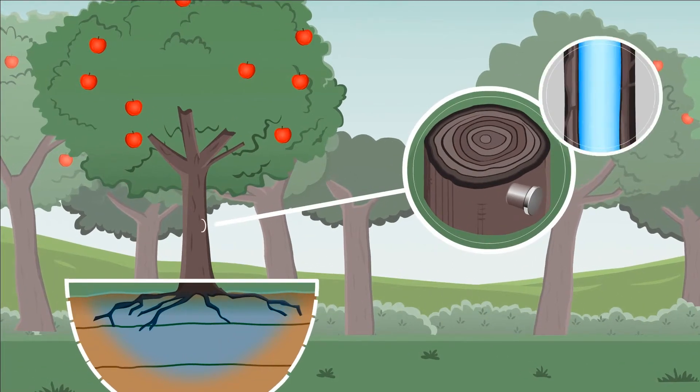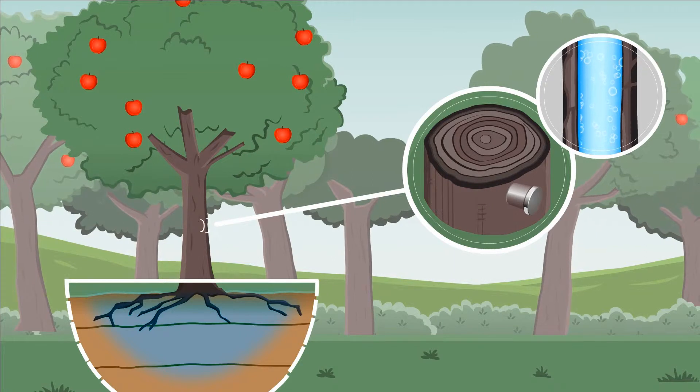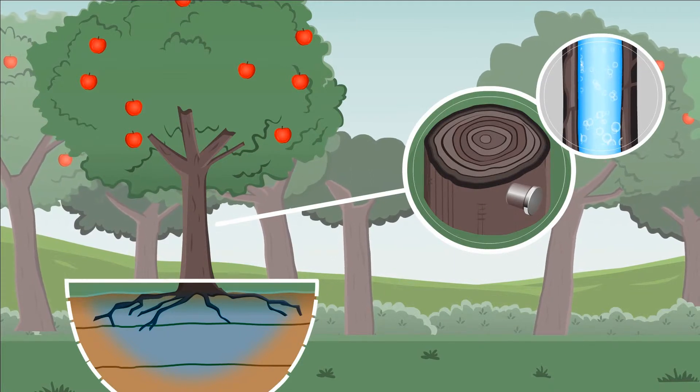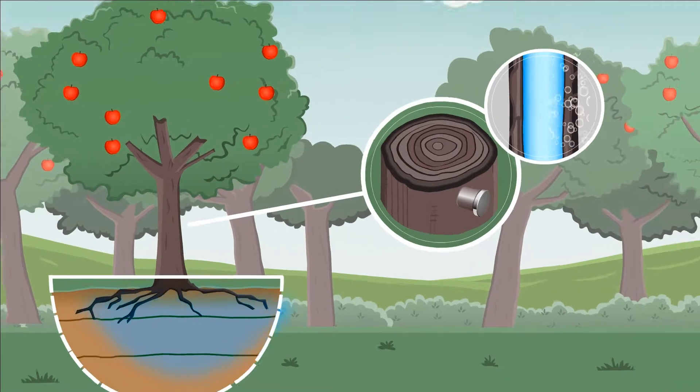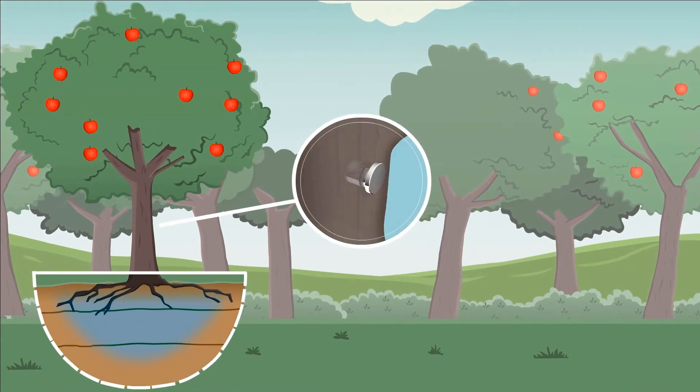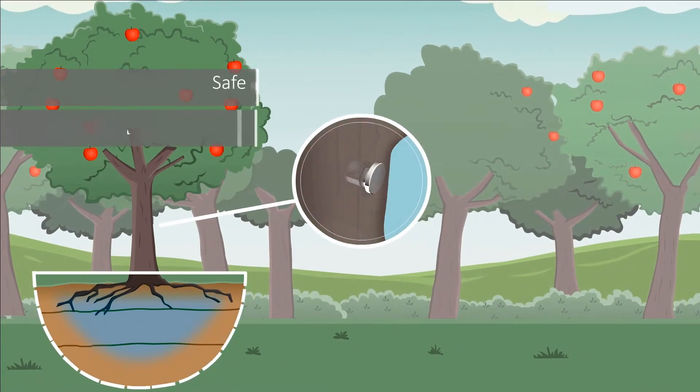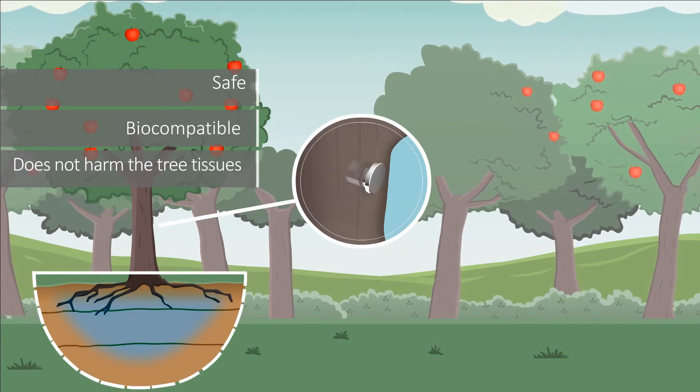The miniature lightweight sensor is embedded in the trunk of the tree in direct contact with the water tissues for continuous, highly accurate SWP measurements. The unique embedding method developed by Saturas has been proven as safe, biocompatible, and does not harm the tree tissues.